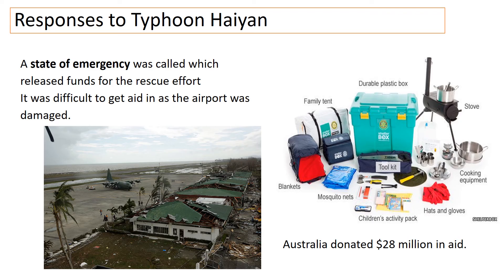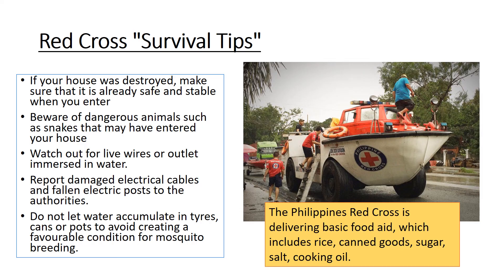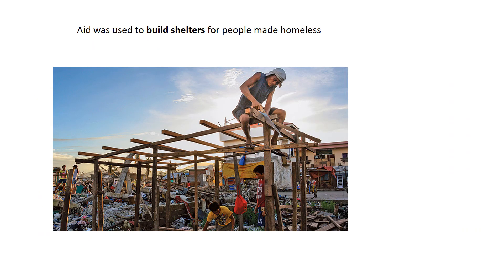A state of emergency was called, which released funds for the rescue effort, but it was very hard to get aid in from foreign countries because the airport was so badly damaged. Countries like the UK and the charity Shelterbox were flying in supplies — essentials such as tents and medical supplies. Australia donated 28 million in aid, and the Red Cross was involved, giving out survival tips such as watching out for live electrical wires immersed in water.